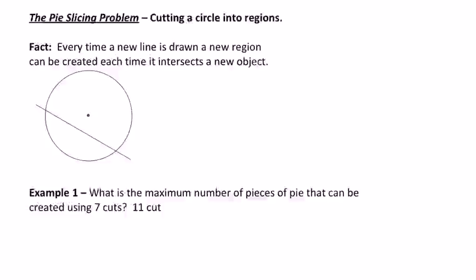The first fact is, every time a new line is drawn, a new region can be created each time it intersects a new object.